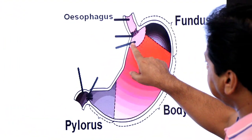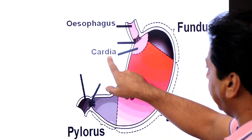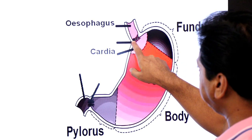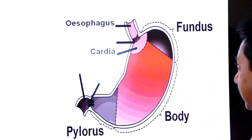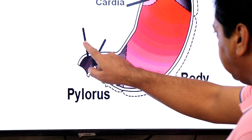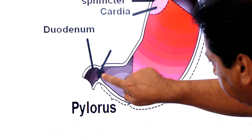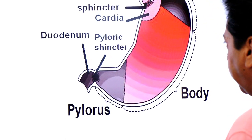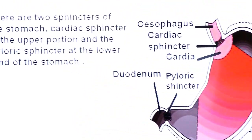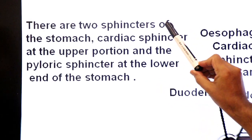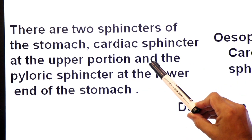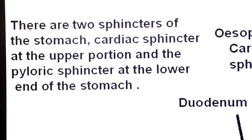This is the cardiac part known as cardia and this is the esophagus. The sphincter located between the esophagus and the cardiac part is called the cardiac sphincter. Here you see the pylorus region and the duodenum. The pyloric sphincter is located between the pylorus of the stomach and the duodenum. There are two sphincters: the cardiac sphincter at the upper portion and the pyloric sphincter at the lower end of the stomach.